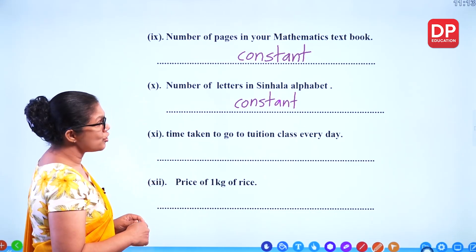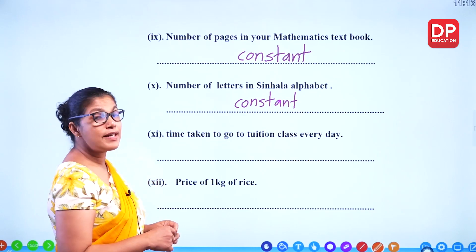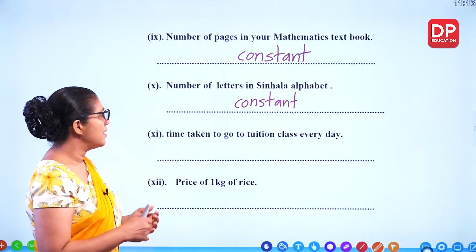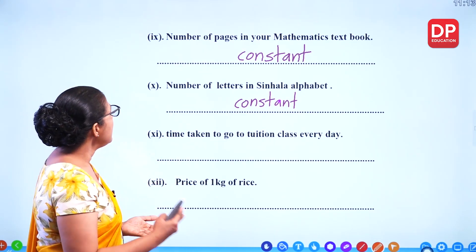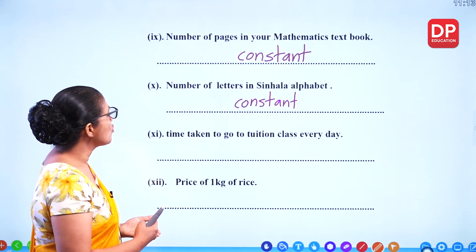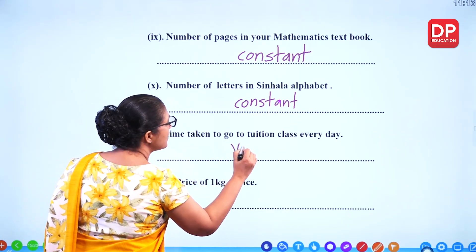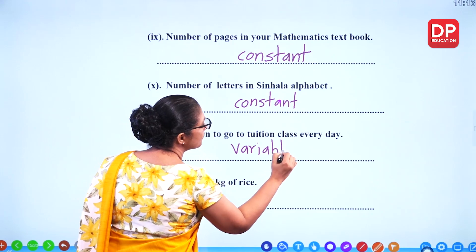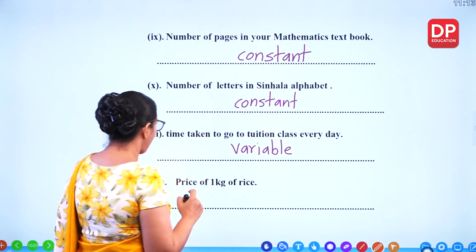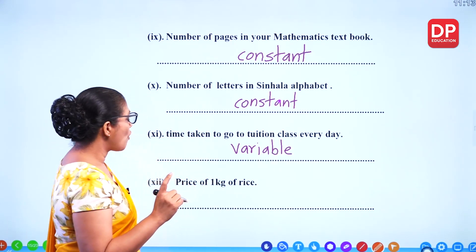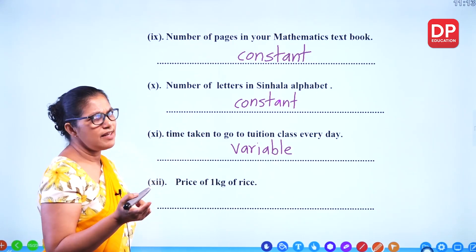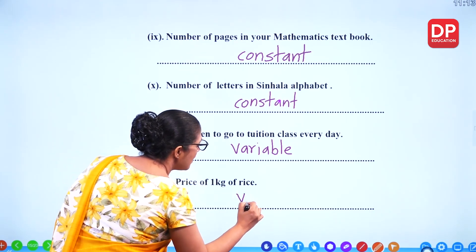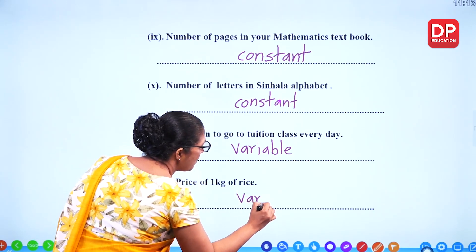Time taken to go to tuition class every day — depending on traffic, it changes, so that's a variable. Price of one kilo of rice — each day it changes, so that's a variable.